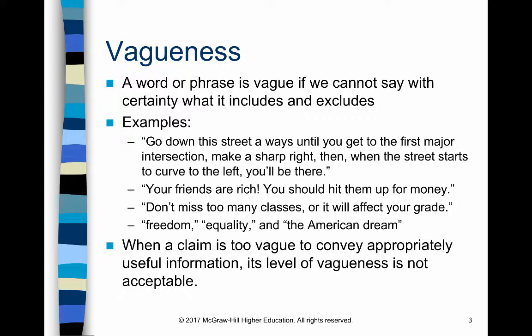Vagueness is mostly unintentional — we simply have a tendency to speak in generalities rather than precisely. Look at these examples: 'Go down this street a ways until you get to the first major intersection. Make a sharp right. Then, when the street starts to curve to the left, you'll be there.' It's almost impossible to know exactly what that person means. How far is 'a ways'? What do they mean by a major cross street — one with a stop sign or a light? Thank goodness for Google Maps.